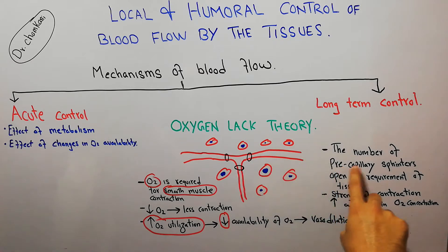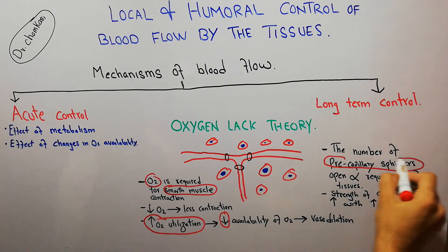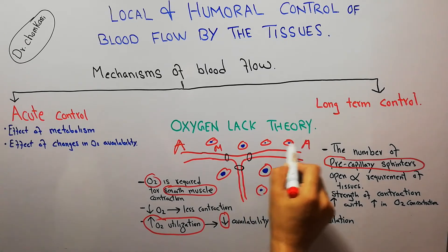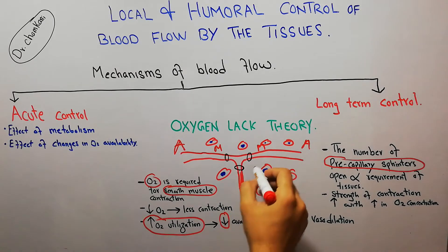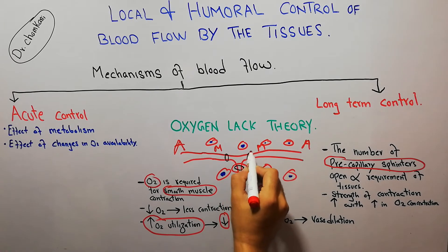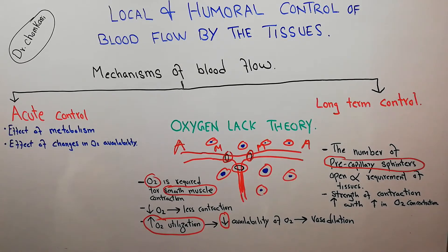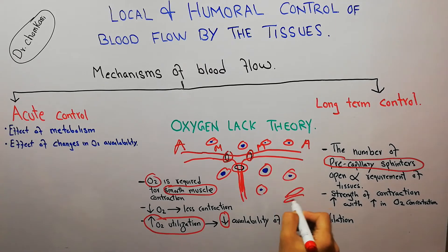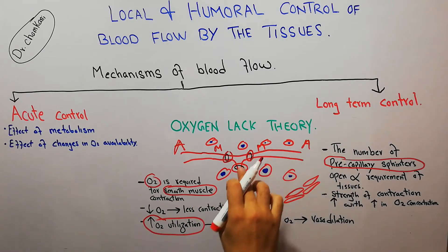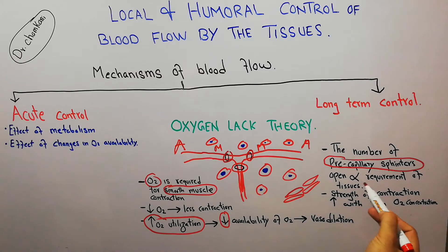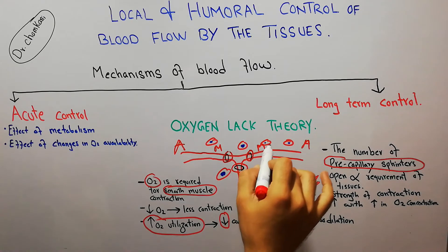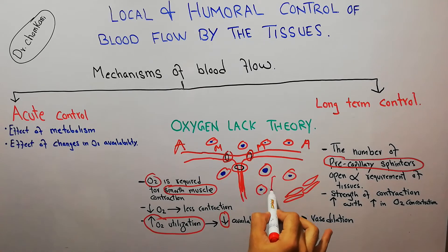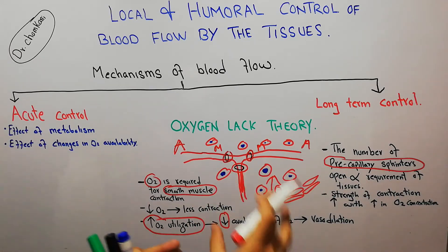In this diagram we can see arterioles, meta-arterioles, and pre-capillary sphincters emptying into capillaries that supply blood to the tissues. The pre-capillary sphincters are also made of smooth muscle, and the number of pre-capillary sphincters that are open is directly proportional to the requirements of the tissue — if the tissue requires more oxygen, more pre-capillary sphincters will be open.